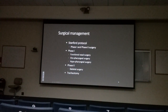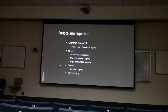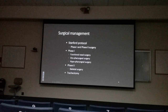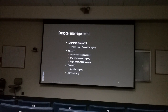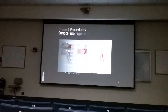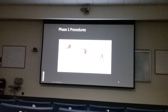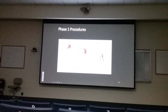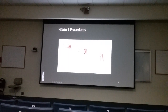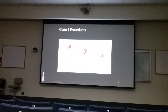Historically, surgical treatment followed a two-phase protocol. Phase one involves soft tissue procedures — nose surgeries (septoplasty, turbinates), tongue procedures, and palate surgery. Phase two involves skeletal surgery. Phase one procedures include everything within the soft tissue: soft palate, nose, septum, turbinates, and tongue base. Phase two involves bone surgery.